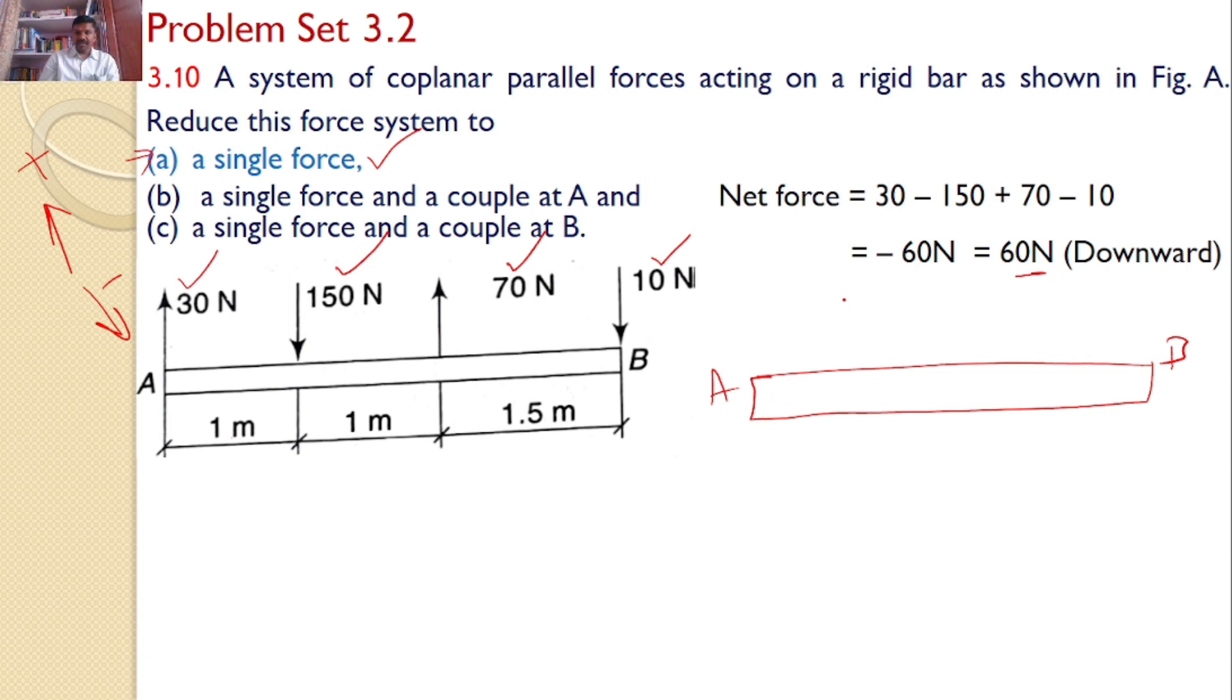But where? Maybe here, or maybe here, maybe here. Where I need to provide this downward 60 Newtons force? So for that, I will consider let this force act at a distance of X from A. So here I am assuming if the 60 Newtons force is acting at a distance of X, I will try to find this X.